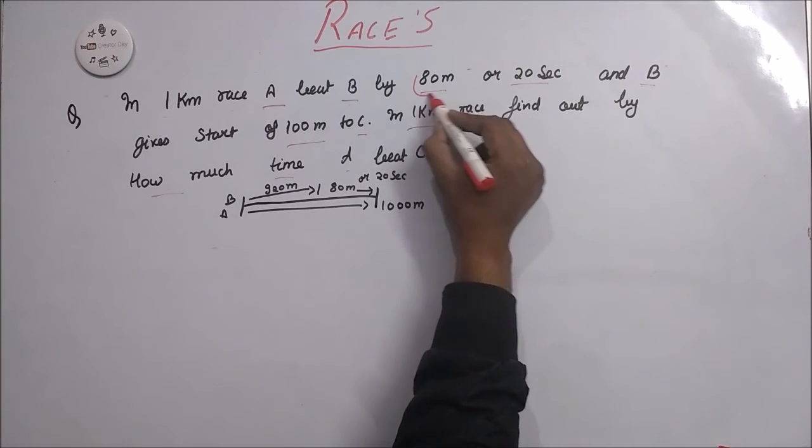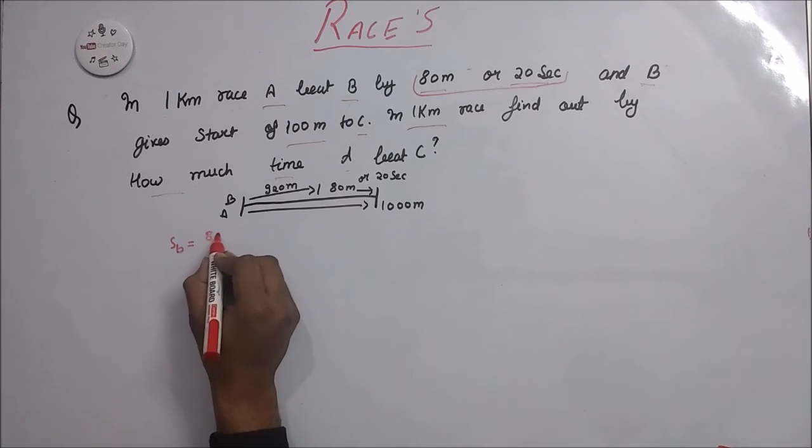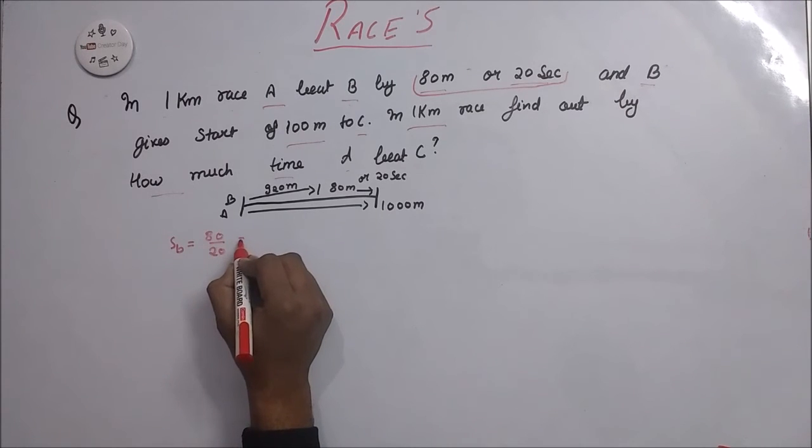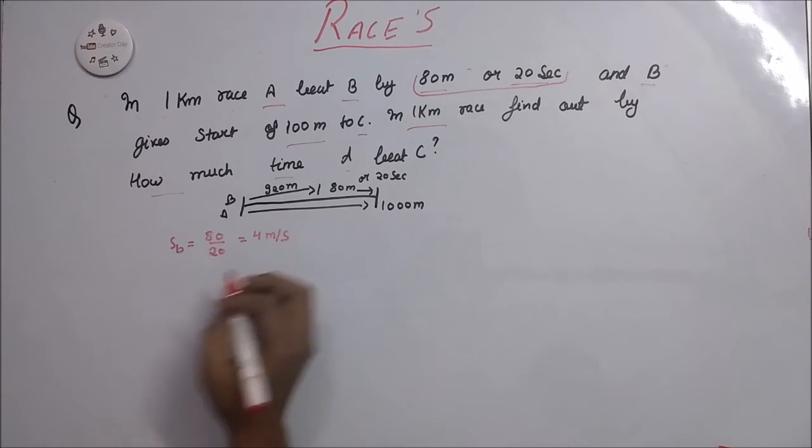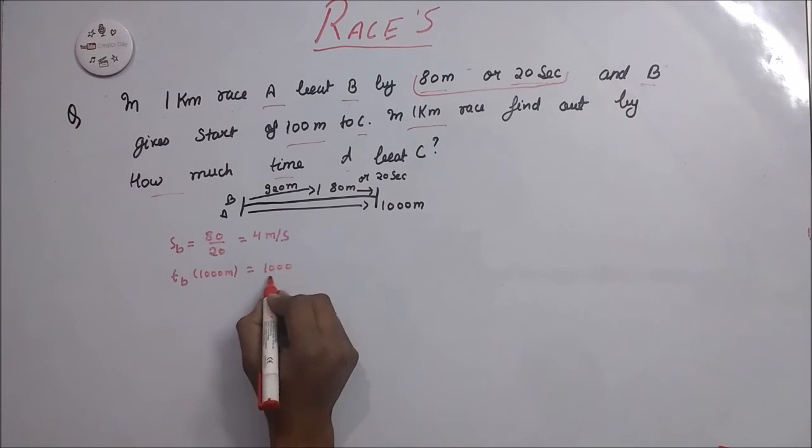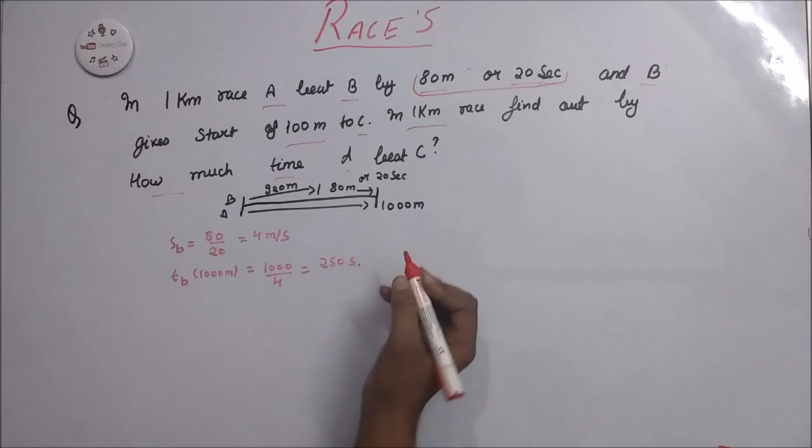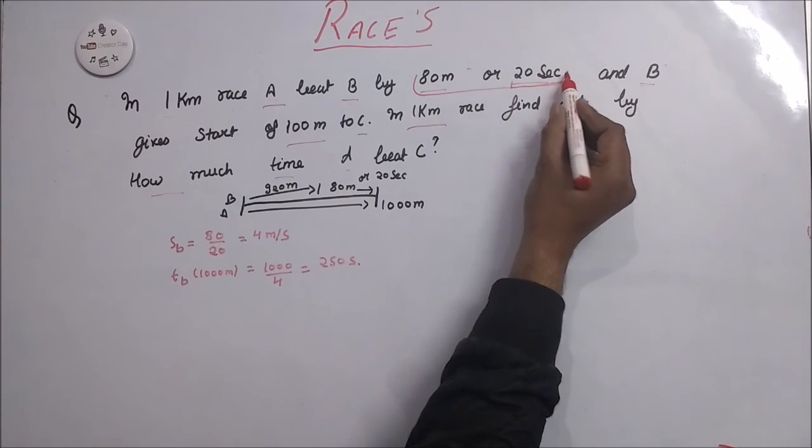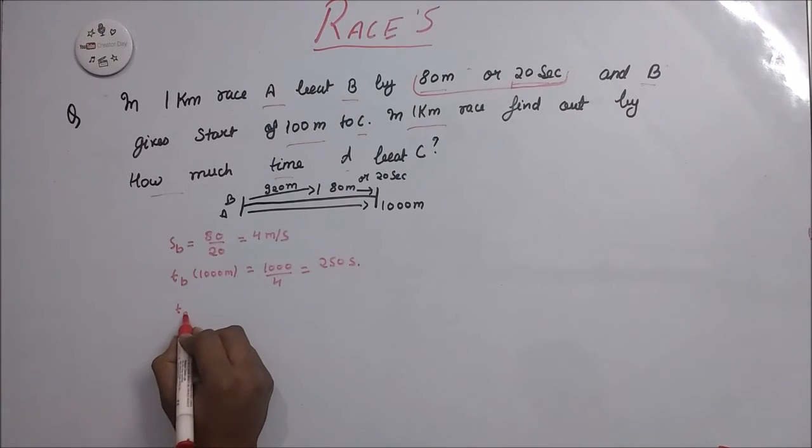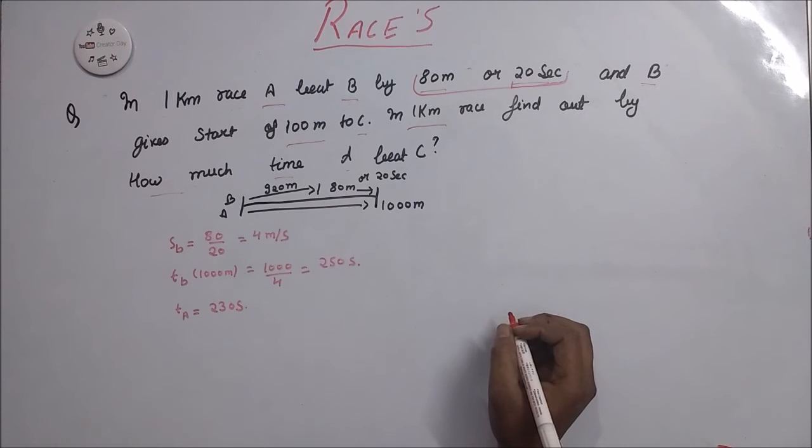And according to this condition, we calculate speed of B which is 80 divided by 20, 4 meters per second. Now time taken by B to travel 1000 meters, it is 1000 divided by 4 which is 250 seconds. Now according to the question, time is 230 seconds.